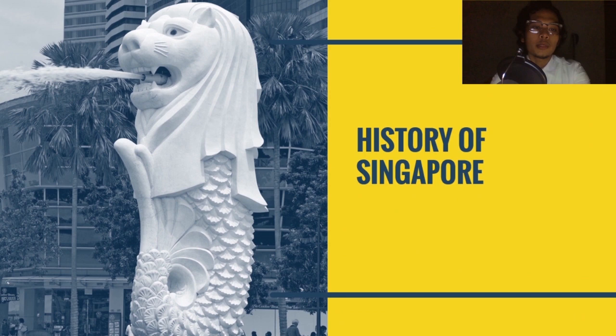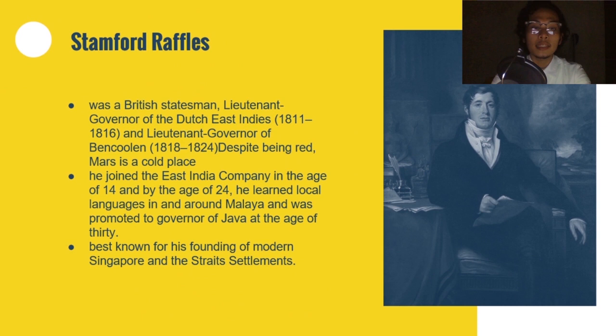Stamford Raffles was a British statesman, lieutenant governor of the Dutch East Indies from 1811 to 1816, and lieutenant governor of Bencoolen from 1818 to 1824. He is best known for his founding of modern Singapore and the Straits Settlements. He joined the East India Company at age 14, and by age 24 he had learned local languages in and around Malaya. He was promoted to governor of Java at the age of 30.